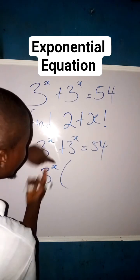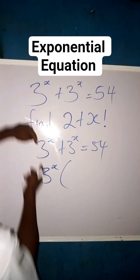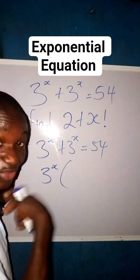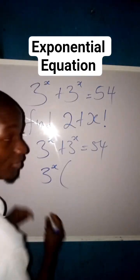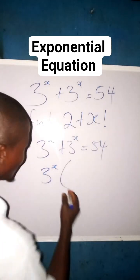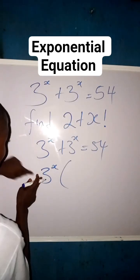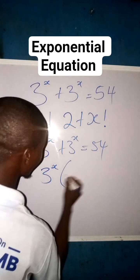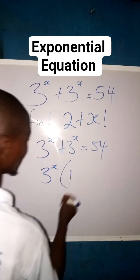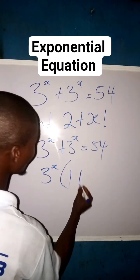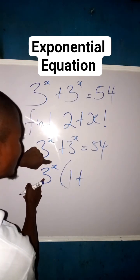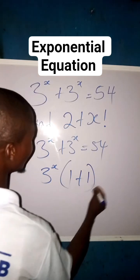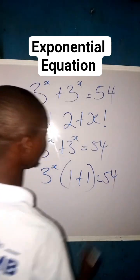What can we multiply by this 3 to the power of x that will give us this 3 to the power of x? We multiply 1 by this 3 to the power of x and it gives us 3 to the power of x. So we have 1 plus 1 inside the bracket. Close the bracket, equals to 54.